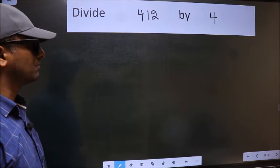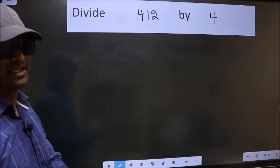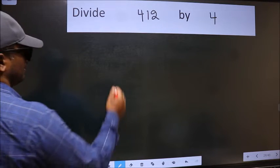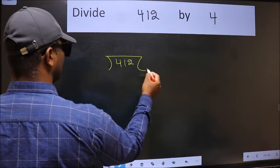Divide 412 by 4. To do this division, we should frame it in this way: 412 and 4 here.